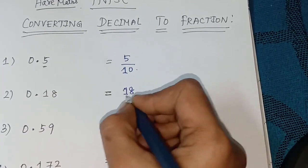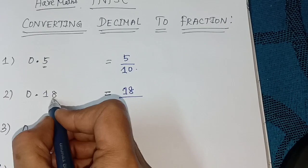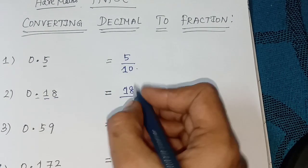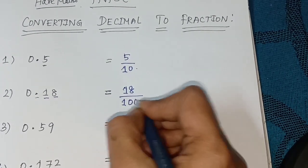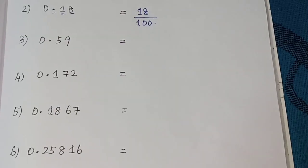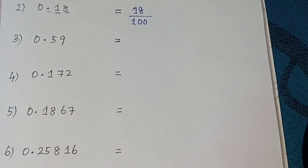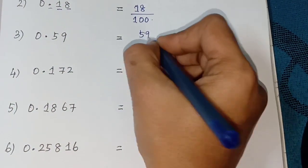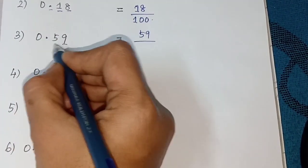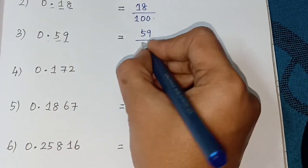Third one, 0.59. This is a two-digit number, so 59 divided by place value once tens 100, which is 59 by 100. Fourth one, 0.172. The digit is a triple digit number, so 172 divided by place value once tens 100 thousand.